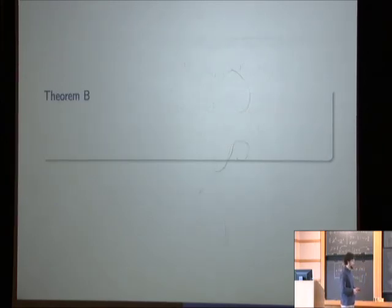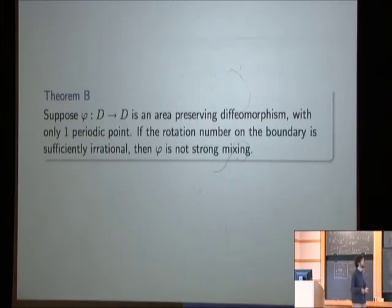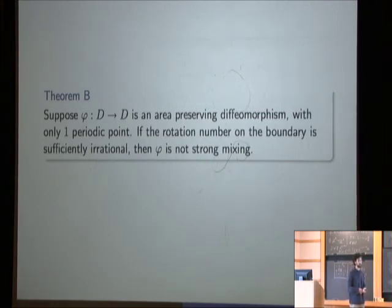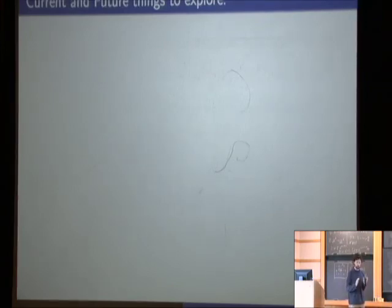So it turns out that this construction with the holomorphic curves, if the rotation number on the boundary of the circle map is sufficiently irrational, so this is a dense subset of Liouvillian numbers, then the holomorphic curves, their energy decays to zero so fast that you can actually approximate the flow for longer and longer periods of time, even as the iterates increase. And this enables you to show that these ones are not strong mixing. So both of these theorems are still being written up. In fact, these things are rigid. Actually, that's what I show. They're rigid. And all the examples they construct are rigid.